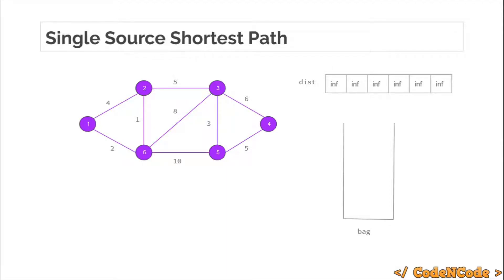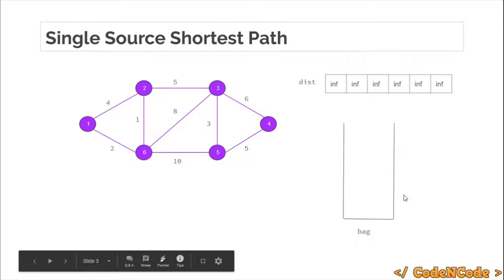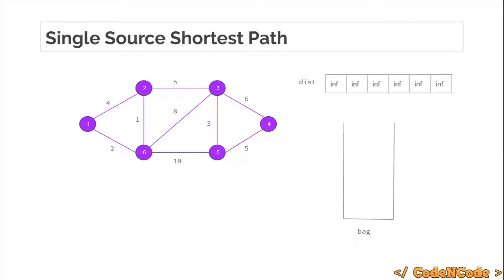We can use a vector, but insertion at the back is constant time while deletion would take time. So keeping all of this in mind, we need a priority queue — or you can also use a set. In a priority queue, finding the minimum element is constant time, insertion is O(log n), and deletion is O(log n). The same is true for a set: insertion is O(log n), deletion is O(log n), and finding the smallest element is constant time. So either we can use a set or a priority queue. We are going to use a priority queue to solve this problem.